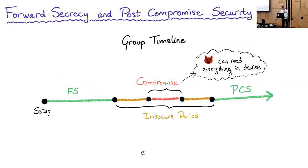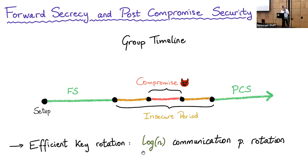If we imagine the group timeline with time running from left to right, and we imagine some compromise in the middle — which in our model means the adversary can read everything in the corrupted device, from all keys currently stored there to all random coins sampled during that period — forward secrecy ensures that all keys up to some point in the past remain secure, and PCS ensures that after some point after the compromise ends, the keys are again secure. We will need to rotate the keys that parties have, aiming to do this efficiently with logarithmic communication per rotation.